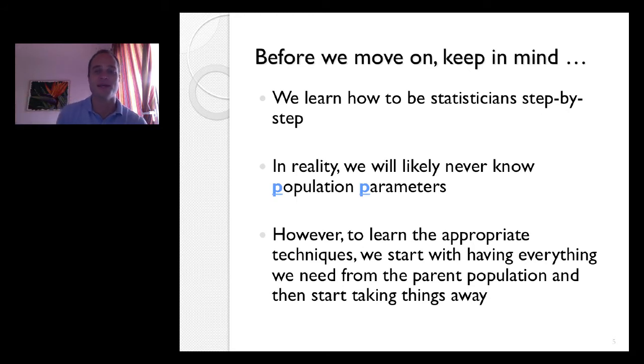All right. And lo and behold, it turns out that we don't even need to know what that population looks like. Because of, some things are reliant, namely the central limit theorem. But we're going to start the course knowing what the population looks like. And then we'll start taking these things away.